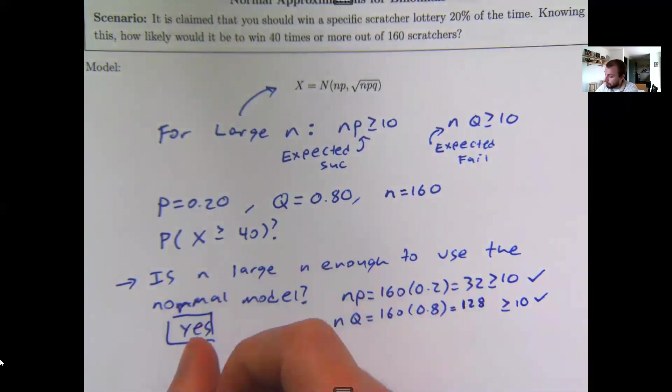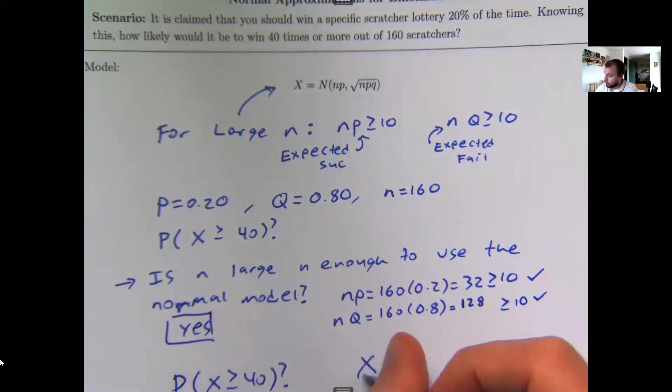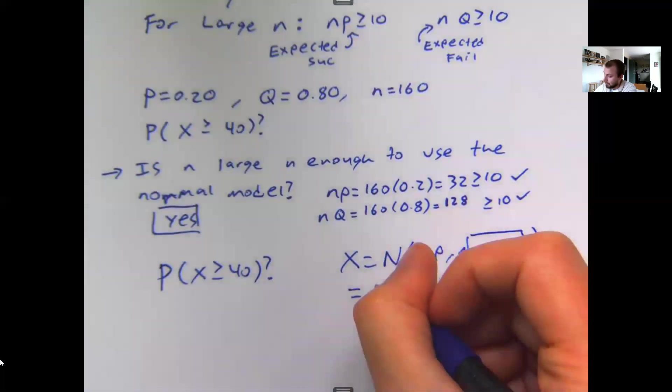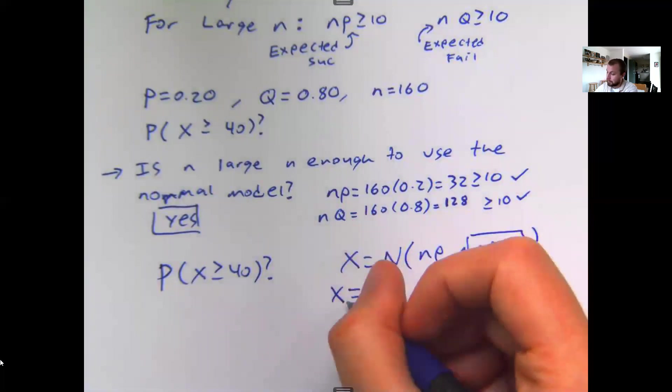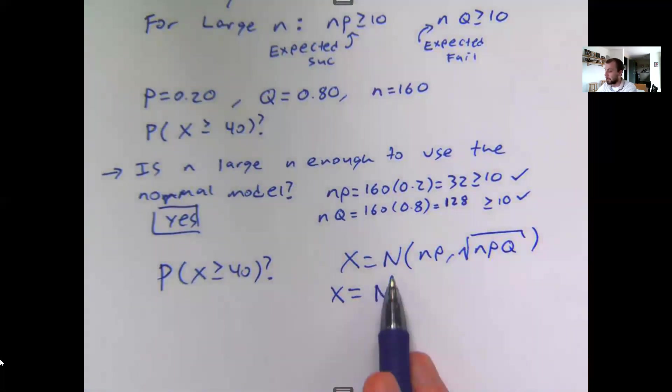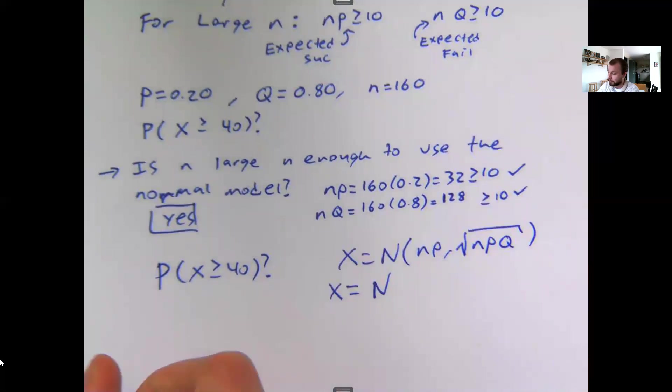So I'm going to answer the question of x being bigger than or equal to 40, and I'm going to use a normal model with an average of n times p and a standard deviation of the square root of n times p times q. I don't plug anything in for x here. This is telling me I'm dealing with counts, and it matches up with my question. I don't plug anything in for capital N. That tells me that when I draw this picture, it's going to look like a bell curve.